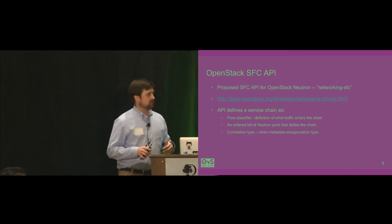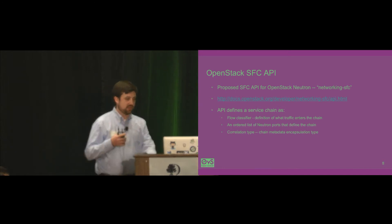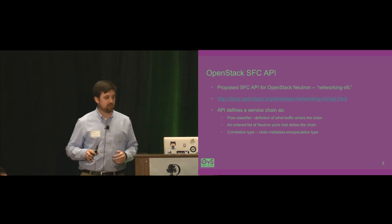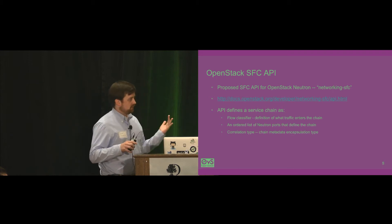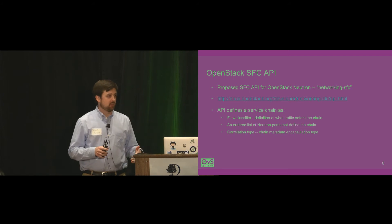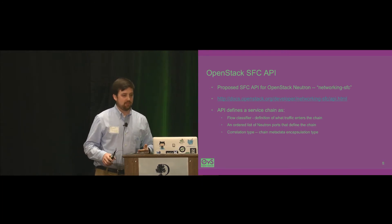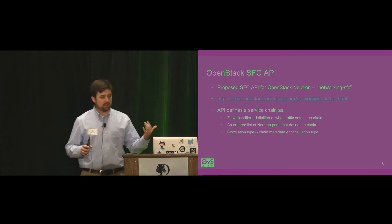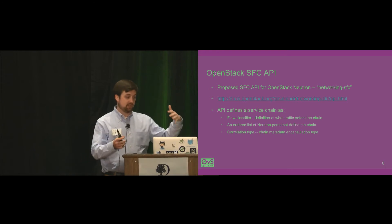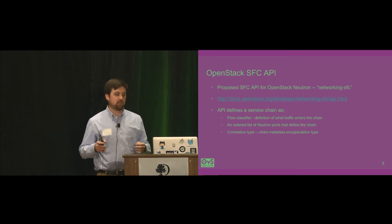There is a subgroup within Neutron called Networking SFC, working on defining an API in OpenStack. I think there's more work to be done there, but I'd encourage you to go there if you want to influence the direction. It breaks the functionality down into a few pieces: the flow classifier — the definition of the type of traffic to match and send through a chain; a way to define the chain itself as an ordered list of Neutron ports; and the metadata, which this API calls the correlation type, defining what metadata is exposed to the service functions — basically a contract between the network and the VMs.